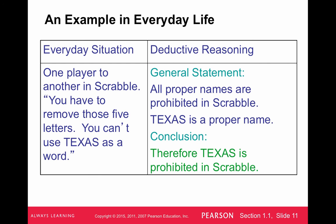For instance, in Scrabble, the general statement says that all proper names are prohibited. Texas is a proper name — like state names or people's names — so the theorem is that Texas is prohibited in Scrabble. We won't deal as much with deductive reasoning in this course because we're mostly given the rules. A lot of what we'll focus on is recognizing weaknesses in inductive reasoning, which is unfortunately what many people rely on in the real world, and we want you to be prepared for those weaknesses.